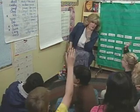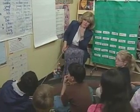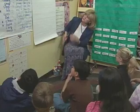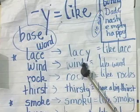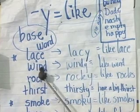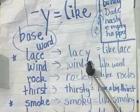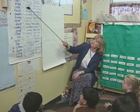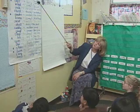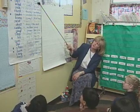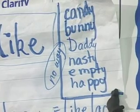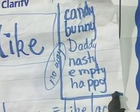Looking at the chart, Robert observes that the second column has a Y and the first column doesn't. Ms. Barron confirms: words like lace becoming lacy and wind becoming windy. Then after collecting the whole list, they add words like candy.